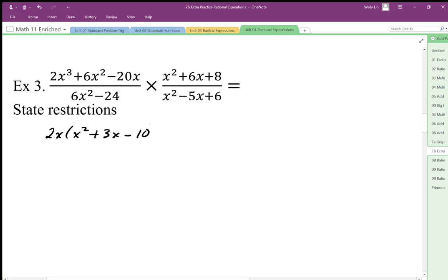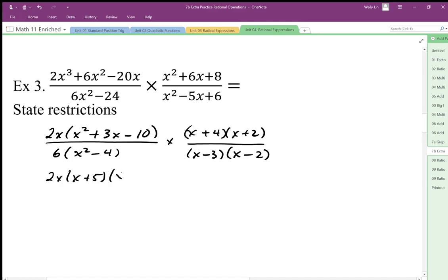10. Then we're going to factor that quadratic. Here the greatest common factor is 6, so we end up with x squared minus 4. Times x plus 4, x plus 2, x minus 3, x minus 2. Let's finish our factoring here, then we can state our restrictions. 2x, x plus 5, x minus 2